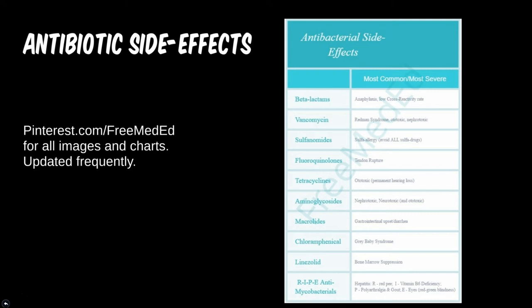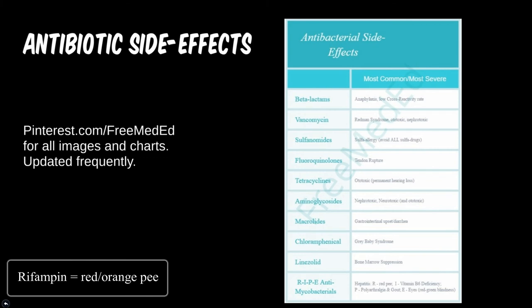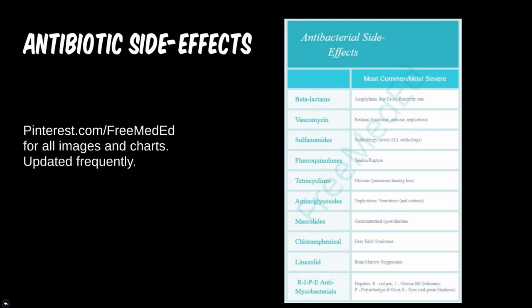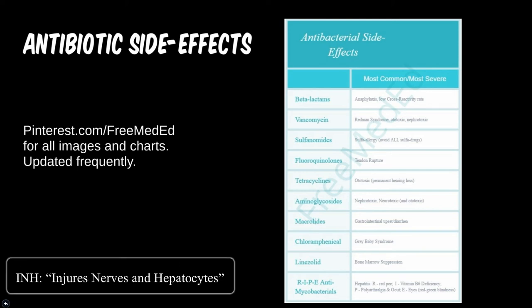Specifically with rifampin, it is most known for turning the patient's urine red-orange — a very disconcerting side effect if you don't warn them ahead of time. Isoniazid is probably best known for peripheral neuropathy. The patient may get a pins-and-needles feeling in their extremities, or it may be more severe. This is due to the decrease in vitamin B6 that INH causes.